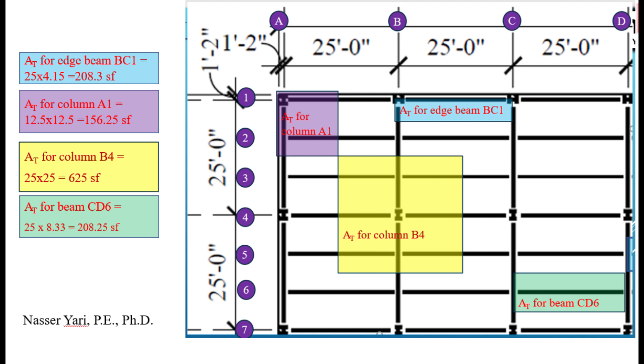And finally, we can see the center beam CD6, and the tributary area is going to be halfway between that beam and the two beams outside of it, just like the bridge girder. And that's going to come out to 25 by 8.33, and that's your tributary area.